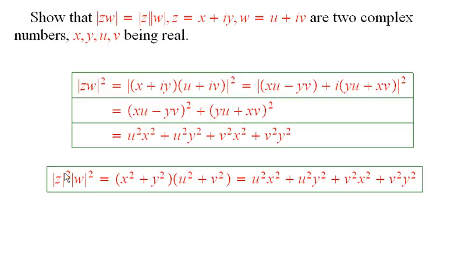On the other hand, if you take absolute value of z squared times absolute value of w squared, you get the product of these two things from the definition. And if you multiply it all out, you get this, and these are the same thing. So, it works.